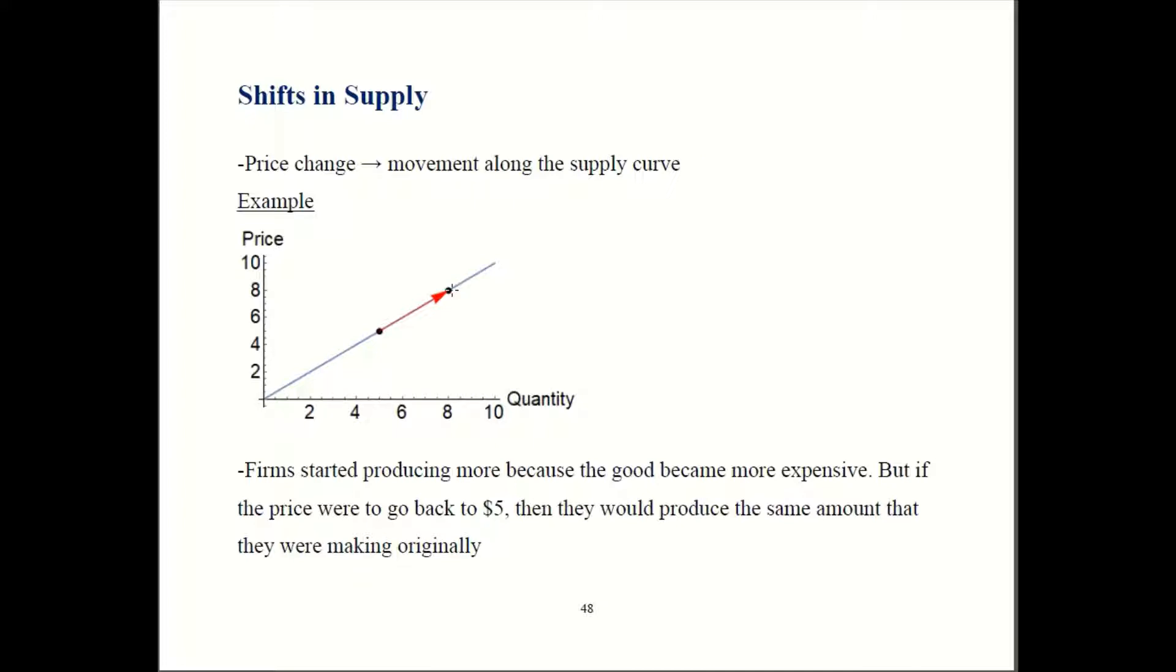So firms produce five units when the price was five. When the price goes up to eight, now they're going to produce eight units. But we're still on the same supply curve. The overall relationship between price and quantity is still given by the same line.